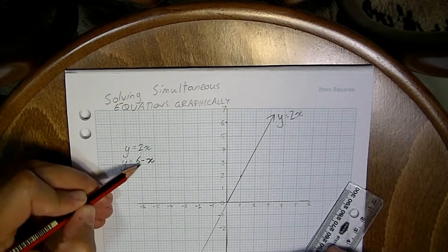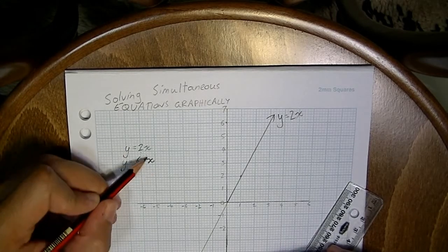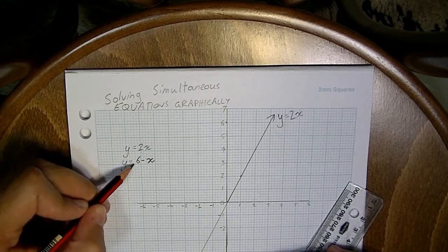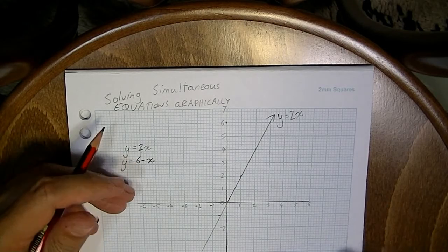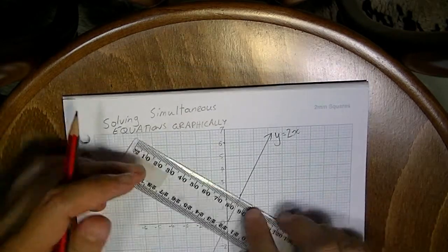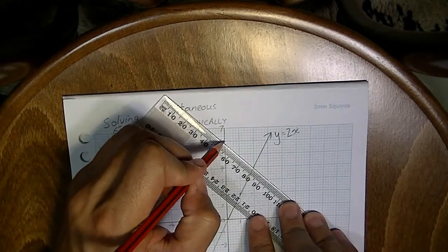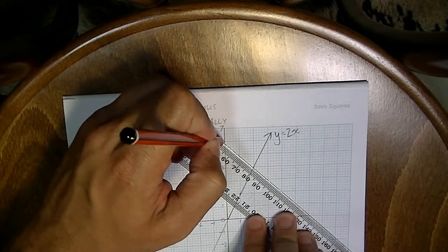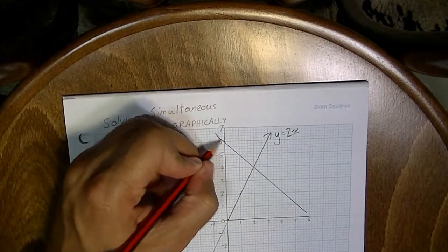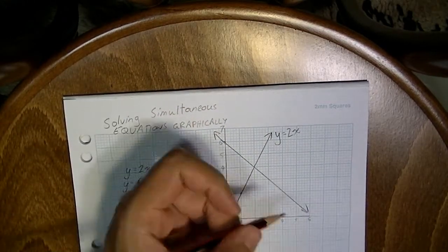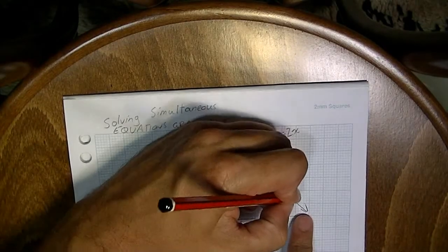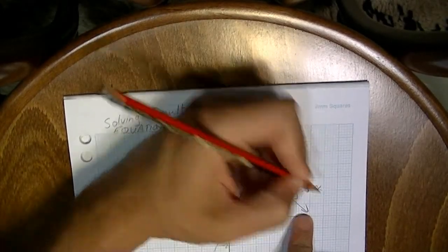Now if I graph y equals 6 minus x, that has a gradient of negative 1 and it has a y-intercept of positive 6. So if I graph that, it's going to look something like this. It's going to pass through the y-axis there. It's going to come down here like this. And that's our equation, y equals 6 minus x.